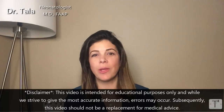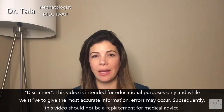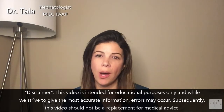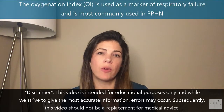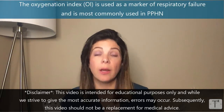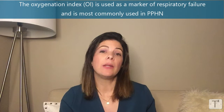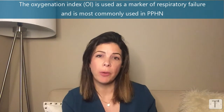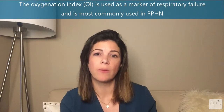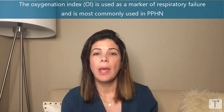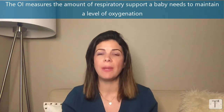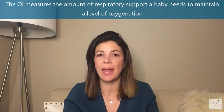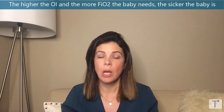Today's NICU nugget is on the oxygenation index, or OI. OI is used as a marker of respiratory failure, most commonly in persistent pulmonary hypertension of the newborn. It measures the amount of respiratory support that a baby needs to maintain a level of oxygenation.